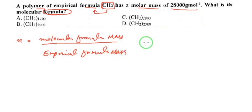CH2 - from this we can find out its empirical formula mass. The empirical formula is given: carbon's mass is 12, hydrogen's mass is 1, but there are 2 hydrogen atoms, so we multiply by 2. This gives us 12 plus 2, which equals 14.